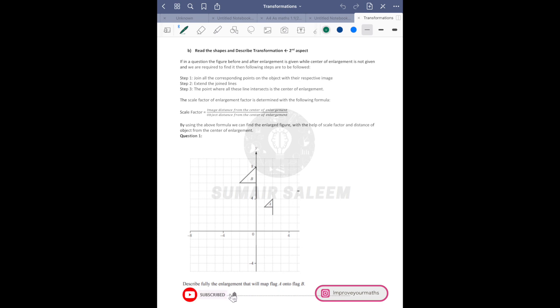Now let's talk about the second and third aspect - if you're given object and image and it's enlarged, meaning enlargement is happening. Size can be bigger or smaller. A onto B, meaning A is object, B is image. You're going to connect this.